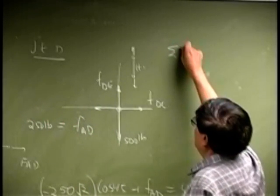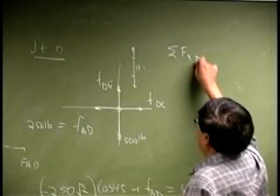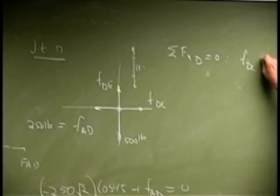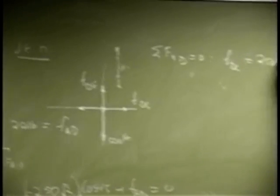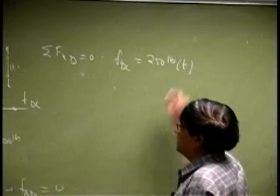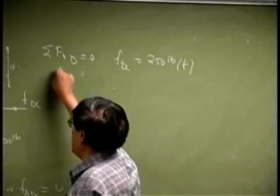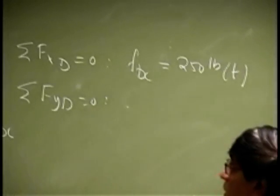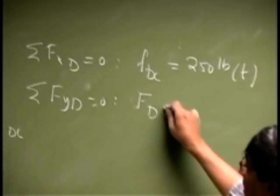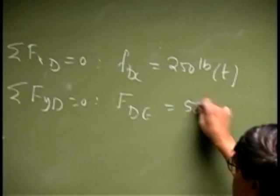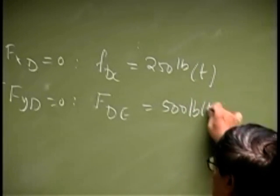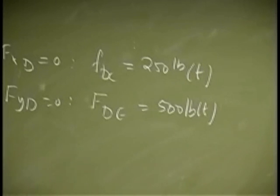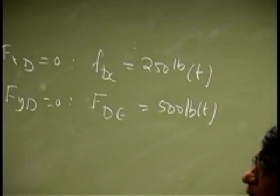So, if you sum your force in Y at the same joint, that gives you FDC as 250 pounds in tension, then you sum your force in Y at the same joint, that gives you FDE as 500 pounds and that remains in tension. So, that is what you get at joint D.